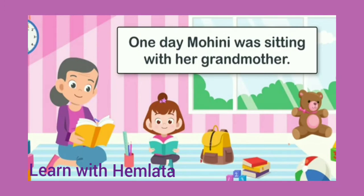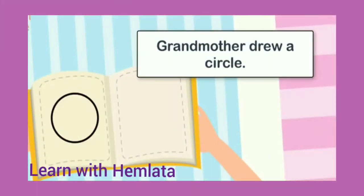One day Mohini was sitting with her grandmother. Ek baar Mohini apni grandmother ke saath baithi hui thi. Grandmother drew a circle. Grandmother — yaani dadi maa — ne ek circle draw kiya. Circle means a gola, as you can see in the picture.